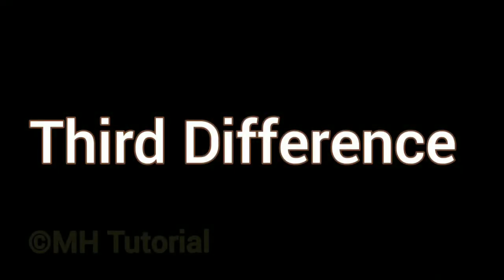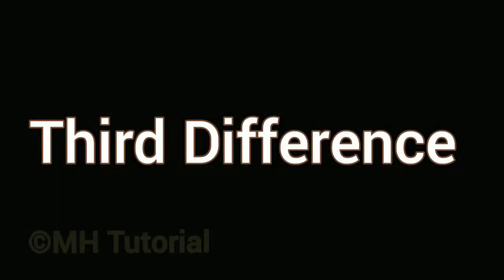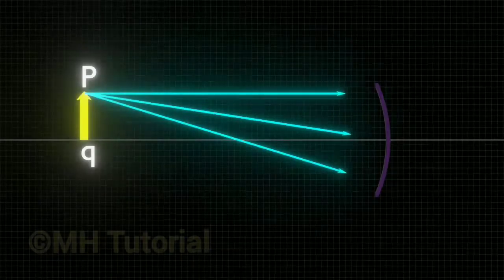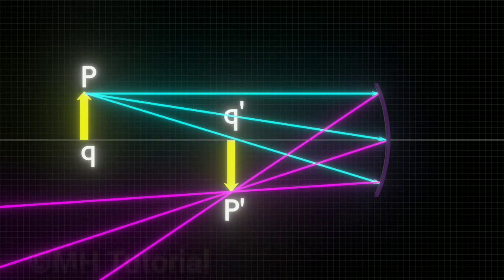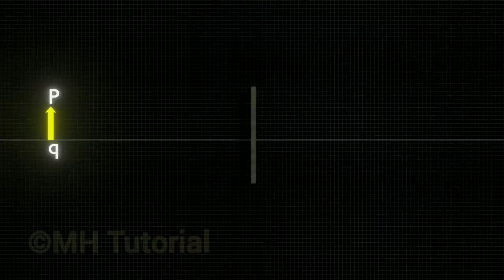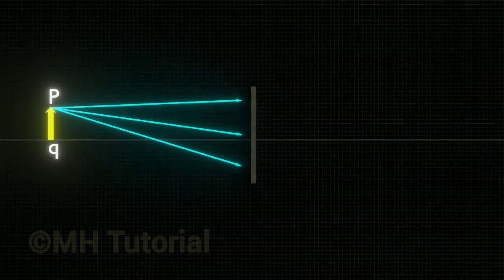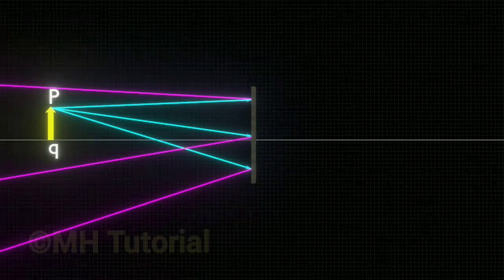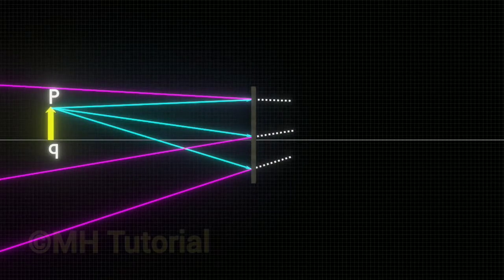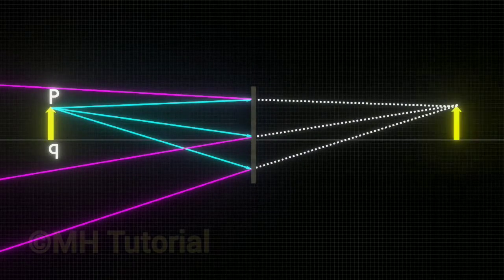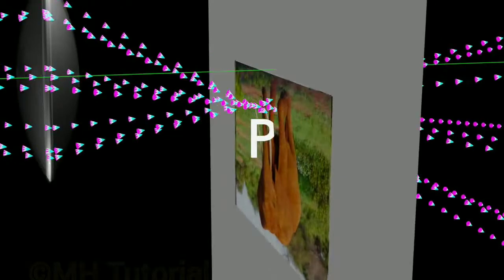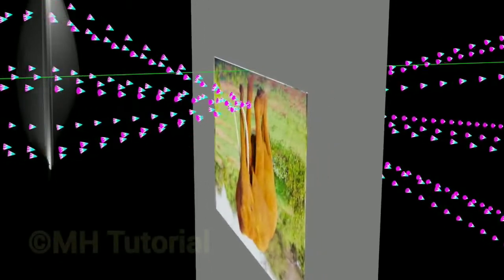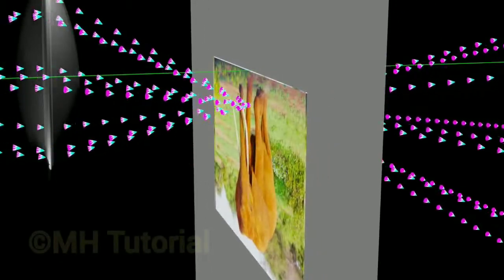Difference number three: a real image is inverted — upside down — with respect to the object. On the other hand, a virtual image is always upright with respect to the object. Hopefully this doesn't require much explanation; you might be able to understand it yourself.